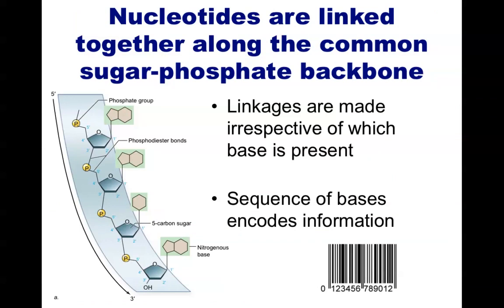The sequence of bases found in nucleic acids encodes information — just like a barcode, with its sequence of black and white stripes, can encode information about a product. Nucleic acids serve as your genetic material, which is passed down from generation to generation. In short, the information inside them represents recipes for making certain proteins, which happens to be the fourth class of macromolecules.